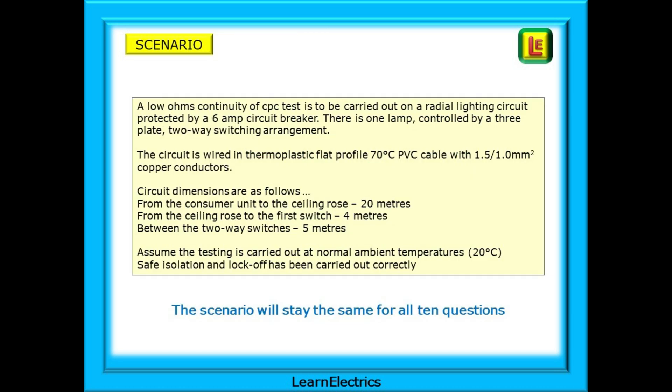Let's look at a typical scenario. A low ohms continuity test of the CPC is to be carried out on a radial lighting circuit protected by a six amp circuit breaker. There is one lamp controlled by a three plate two-way switching arrangement. The circuit is wired in thermoplastic flat profile 70 degrees Celsius PVC cable with 1.5 by 1 millimeter copper conductors.